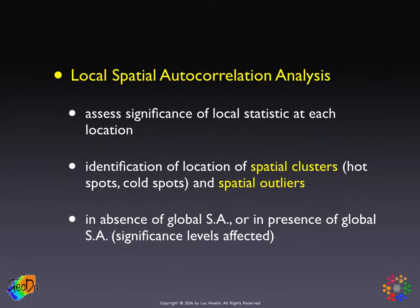In both cases, we can make these statements with a given level of significance because we have assessed the significance of the local statistic. That significance suffers from multiple comparison issues and also from a potential effect of global spatial autocorrelation. Notably, you can run a global Moran's I and find no significant evidence of spatial autocorrelation, but if you run the local tests, you may find small subsets where the local statistic is significant — the one does not preclude the other.